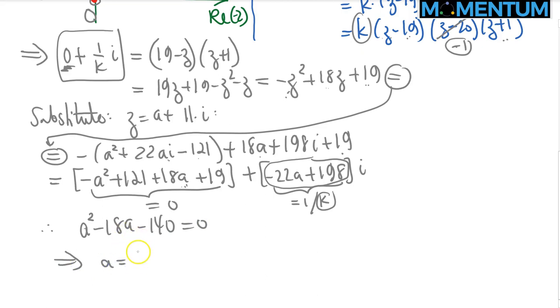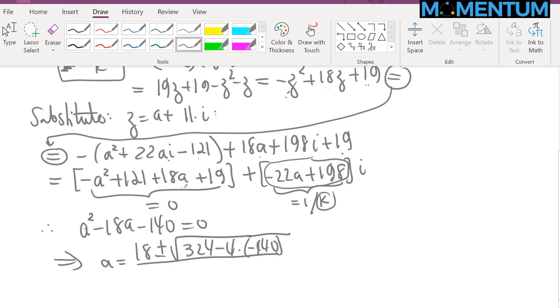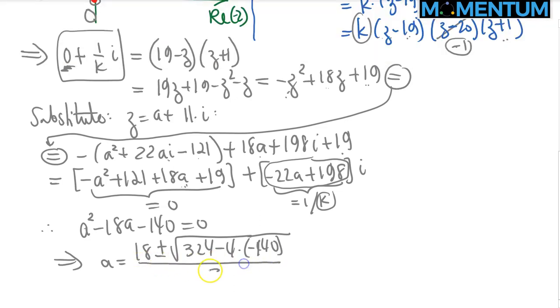A is equal to 18 plus or minus square root of 18 squared is 324, minus 4 times minus 140, all divided by 2. Okay, so let me do it again, all divided by 2, and that's just 18 over 2 is 9, and then there's a factor of 4 and 4 here, so factoring out the 4, there's an 81 left here, so plus or minus, and factoring out the 4 outside the square root will give you a 2, it will cancel with that 2, so we will be left with square root of 81 plus 140, which is just 9 plus or minus square root of 221,